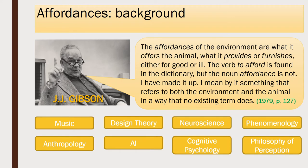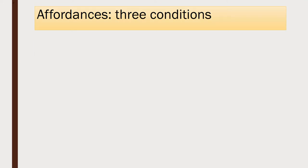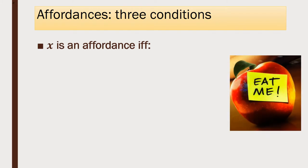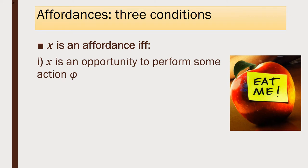In talking about affordances, the first thing we have to do is pin down exactly what our understanding of affordances is. Here's my best attempt to give three individually necessary and jointly sufficient conditions of something being an affordance. Take this apple for example — I want to say that this apple affords eating because it satisfies the following three conditions. The first condition is that the apple presents an opportunity to perform some action phi, in this case the act of eating. Opportunities for action are best cashed out in terms of pairs of dispositions: I have the dispositional property of having a capacity to eat things, and the apple has the dispositional property of being edible by certain kinds of creature. Put those two dispositions together and you've got something like an opportunity for action.